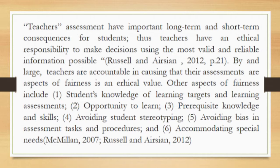Number two is opportunity to learn. Number three is prerequisite knowledge and skills. Number four is avoiding student stereotyping. Number five is avoiding bias in assessment tasks and procedures, and accommodating special needs.